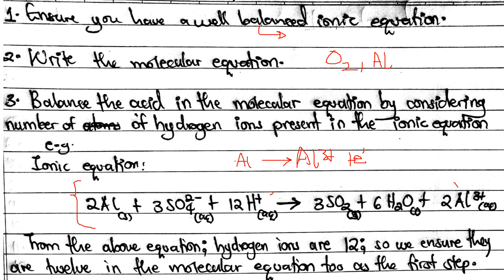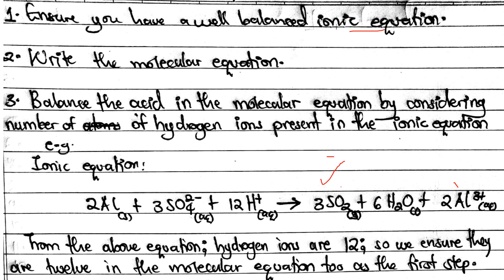I'm just reviewing the redox reaction knowledge we discussed earlier on this channel. After ensuring you have a well-balanced ionic equation by eliminating electrons from the two half equations to get the overall equation — this equation is also marked. Now, the main focus for this video is: if you have the ionic equation formed but still want to use the molecular equation, here's how. We write our balanced ionic equation, obtained using redox reaction knowledge, and also write the molecular equation which we want to balance.